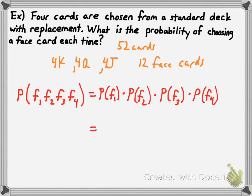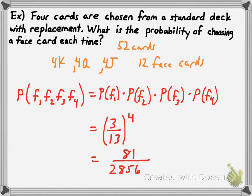The probability of getting a face card is 12/52, which simplifies to 3/13. Since we're replacing the card each time, that probability is the same for every draw. So rather than writing 3/13 four times, we write (3/13)⁴ = 3⁴/13⁴ = 81/28,561. As a percentage, that's about 0.2% of the time you can expect to get four consecutive face cards when drawing with replacement.